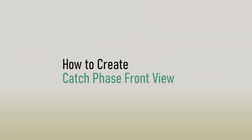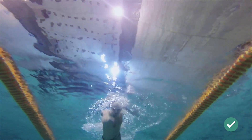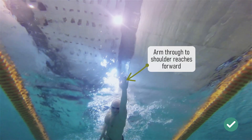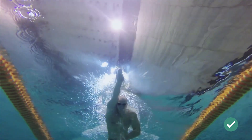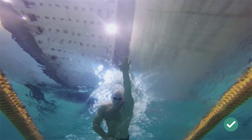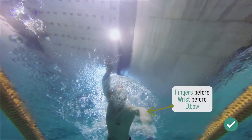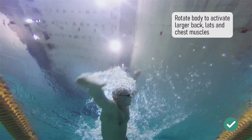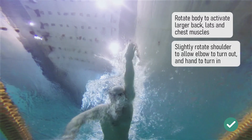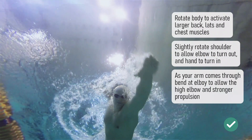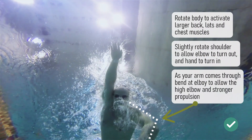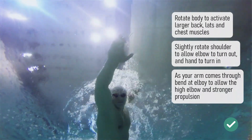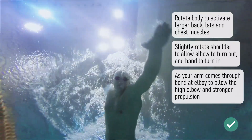The second angle to show is the front view, which allows us to see how to achieve the high elbow catch phase. Once the hand has entered the water, your arm and shoulder should reach forward. From that forward reach position, we drive the mantra of fingers before wrist, wrist before elbow. To achieve this, we create a smooth and gradual bending of the elbow and a slight rotation out of the shoulder, allowing us to create that high elbow catch position and put your arm and upper body in the strongest position to drive the pull phase.